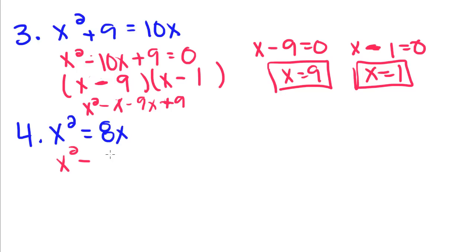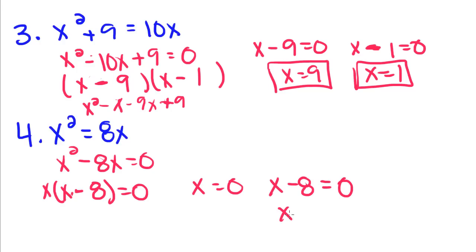We have to move this 8x over. We can factor an x out and we get x minus 8 equals 0. Set both factors equal to 0. Add 8 to both sides. You get x equals 8 and x equals 0.